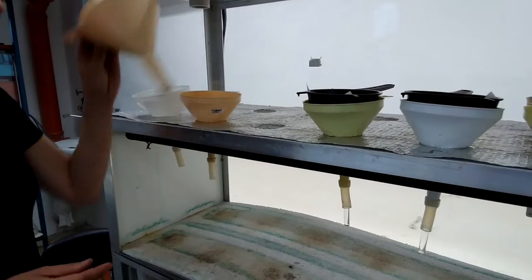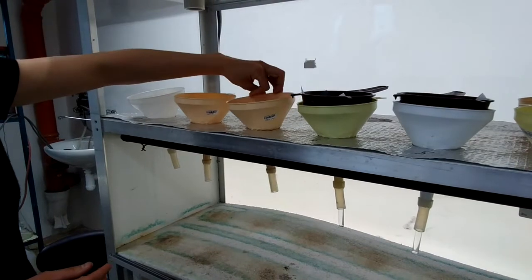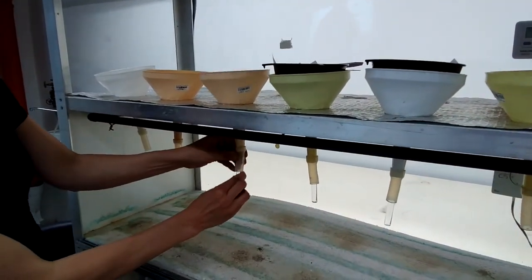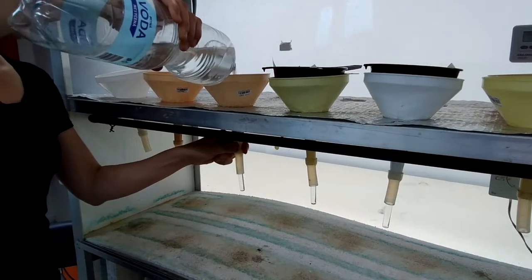To prepare the extractor, place the funnels in the funnel holders, attach the vials at the bottom of the hoses, and fill the funnels with drinking water by about a half.